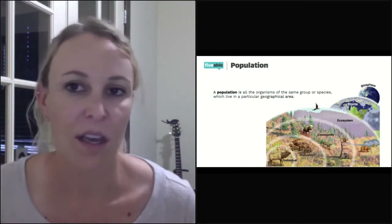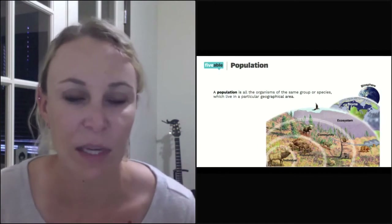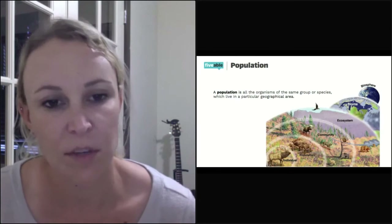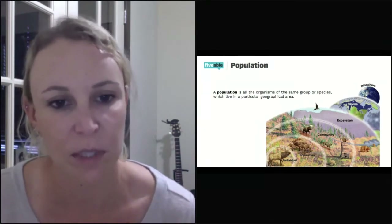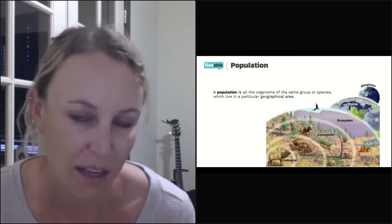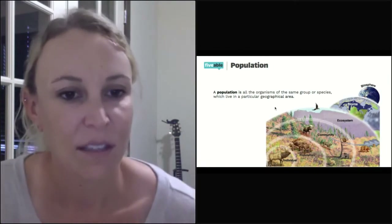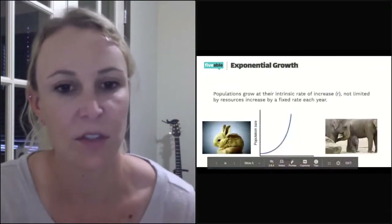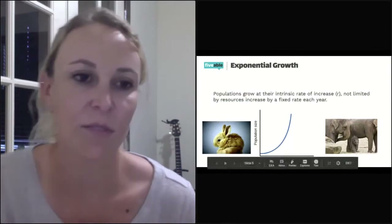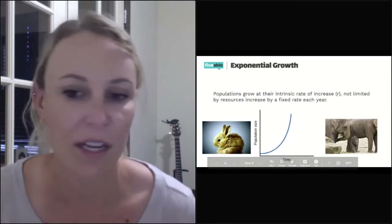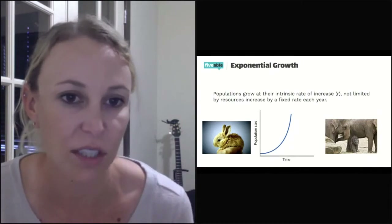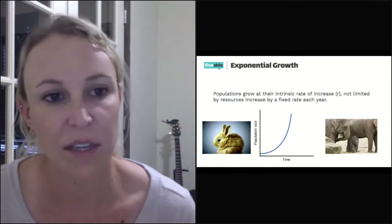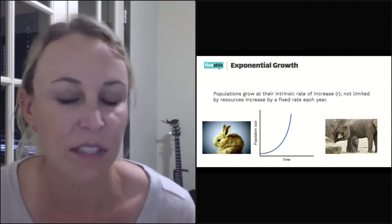That's an overall overview of environmental science and where everything fits. But today we're looking specifically at a population — a group of organisms of the same species in the same geographical area so that they can interact with each other. Exponential growth is what populations do when they are not inhibited by anything else. Populations grow at their intrinsic rate of increase, noted by lowercase r, which is not limited by resources, increasing at a fixed rate each year.